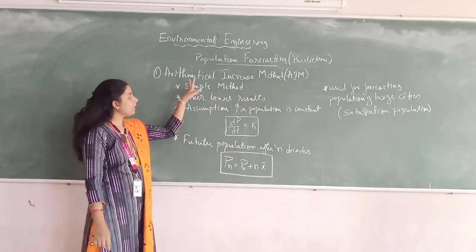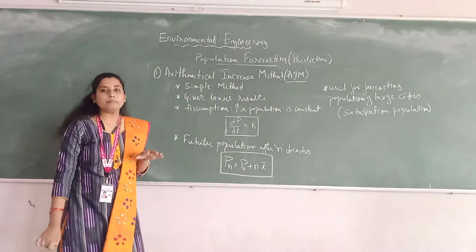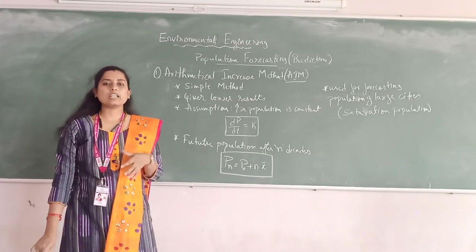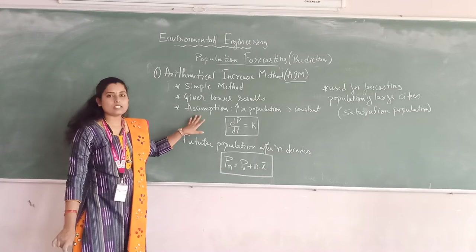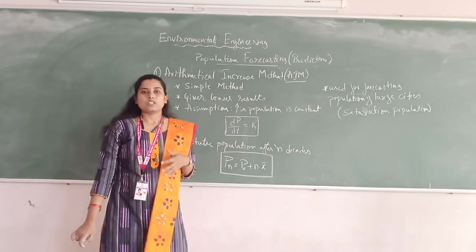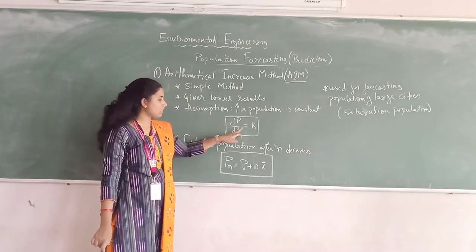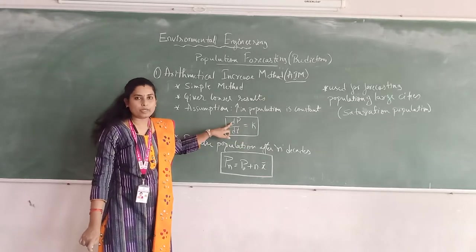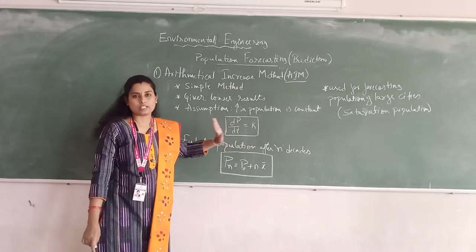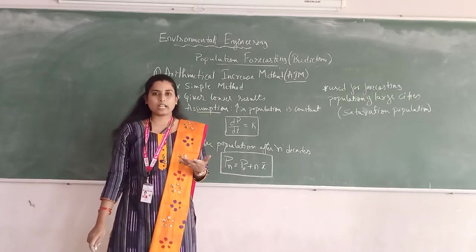The first forecasting method is the arithmetic increase method, shortened as AIM. This is the very simplest method for population forecasting, although it gives lower values. The main assumption here is that the increase in population from decade to decade is taken as constant — that is, dP/dT equals k, where dP is the change in population with respect to time is constant.